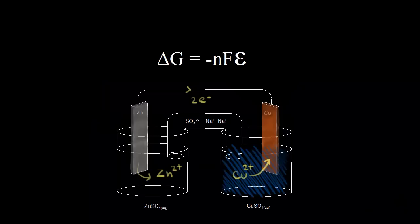When you're dealing with a voltaic cell, it's important to relate the potential of the cell to the free energy of the redox reaction. Here's the equation that relates free energy to the cell potential. Delta G is the change in free energy, and for a spontaneous reaction, delta G is negative. So delta G is negative for our spontaneous redox reaction in our voltaic cell, and we're going to calculate the value for delta G at the end of this video.